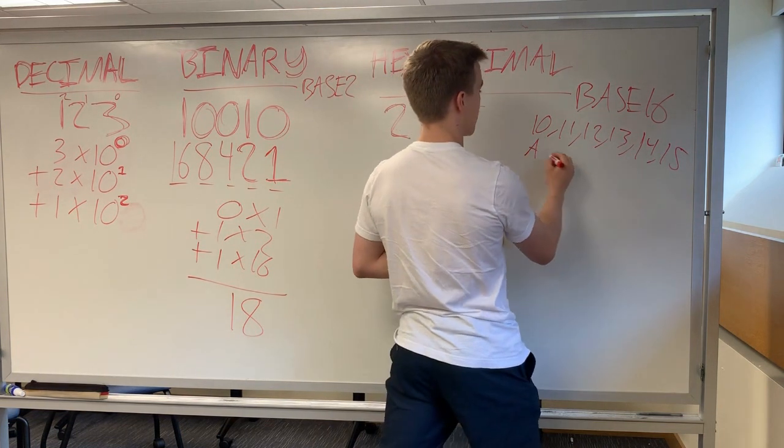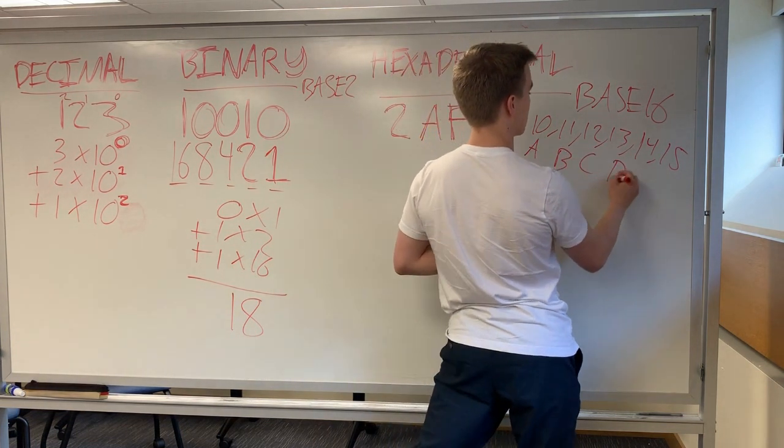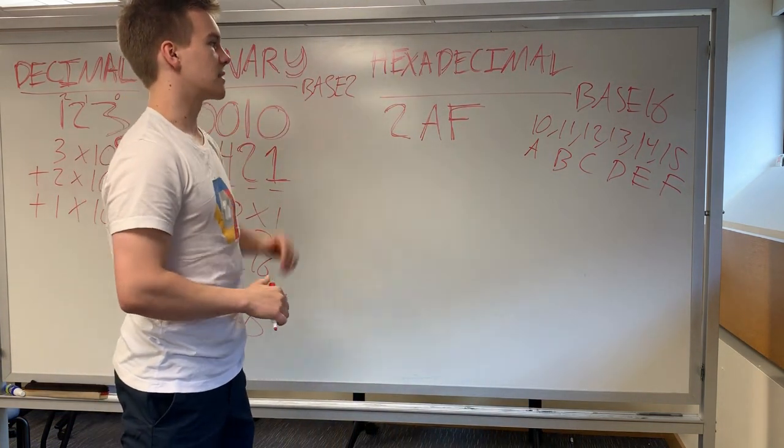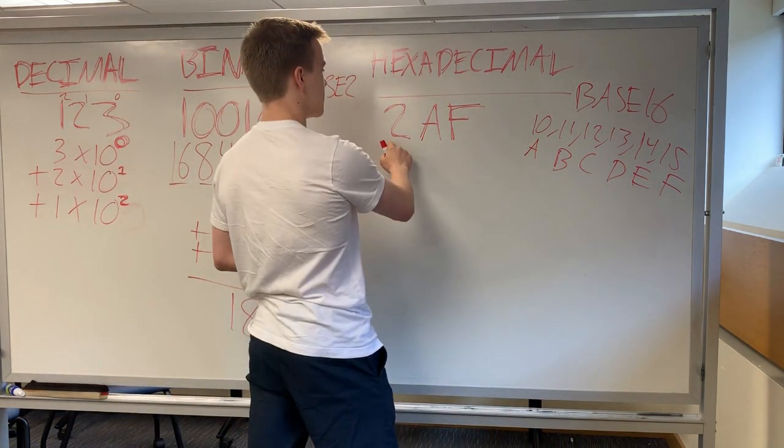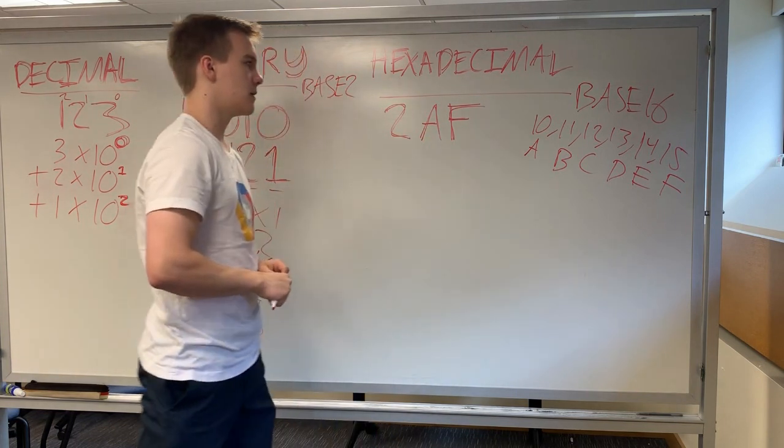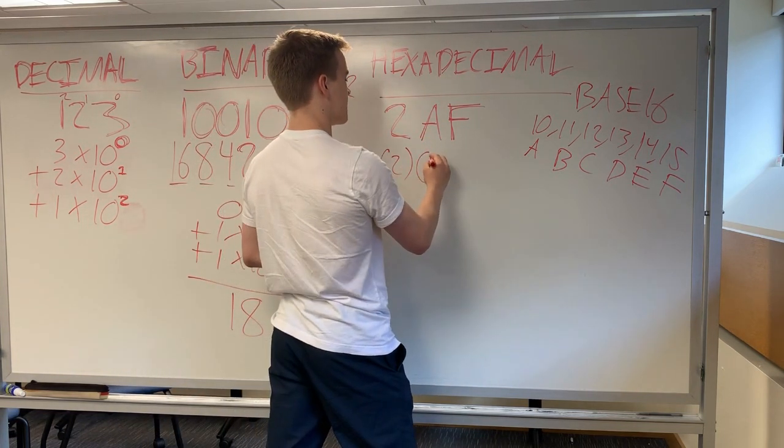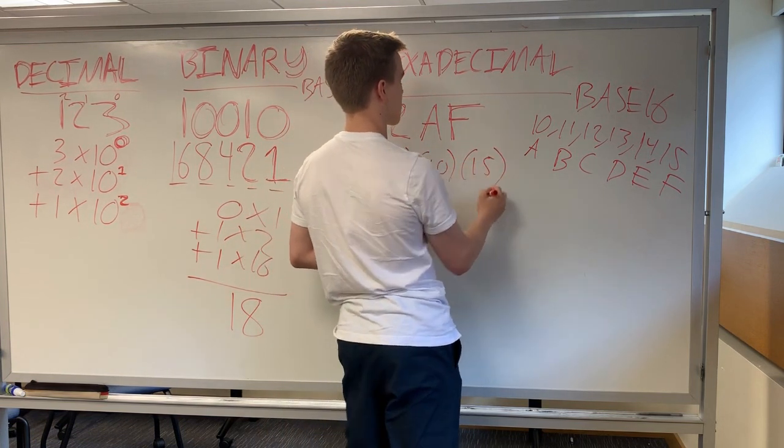So this is going to be A, B, C, D, E, F. So when I write a number in hexadecimal, like 2AF, what that really means is 2 is the first digit, 10 is the second digit, and 15 is the third digit.